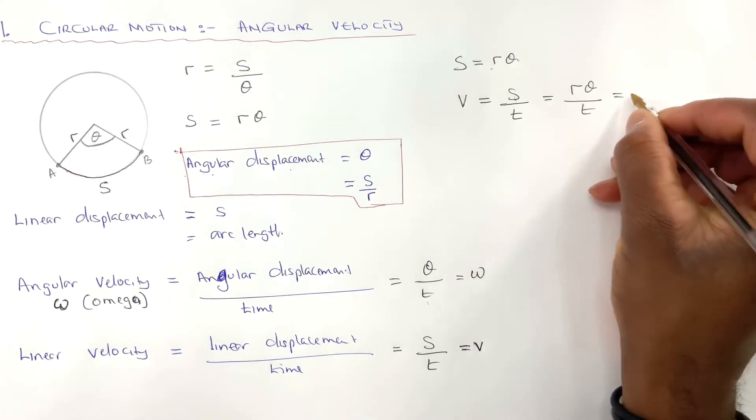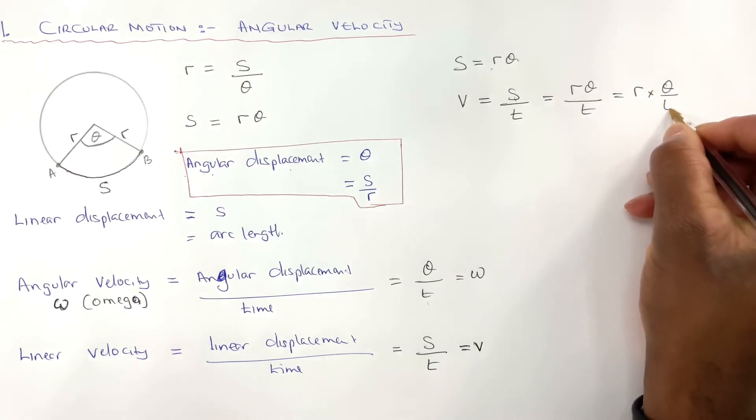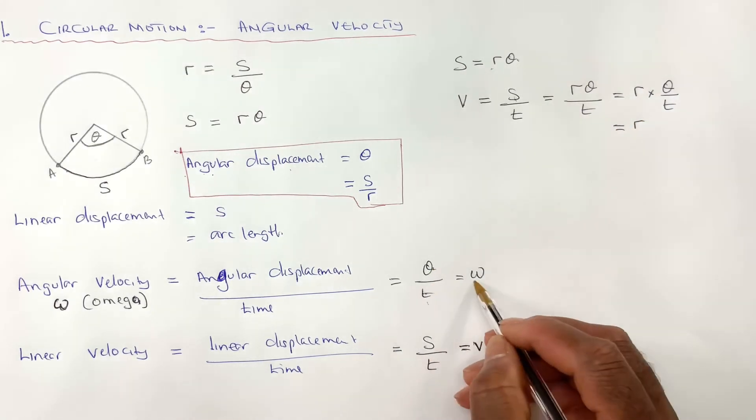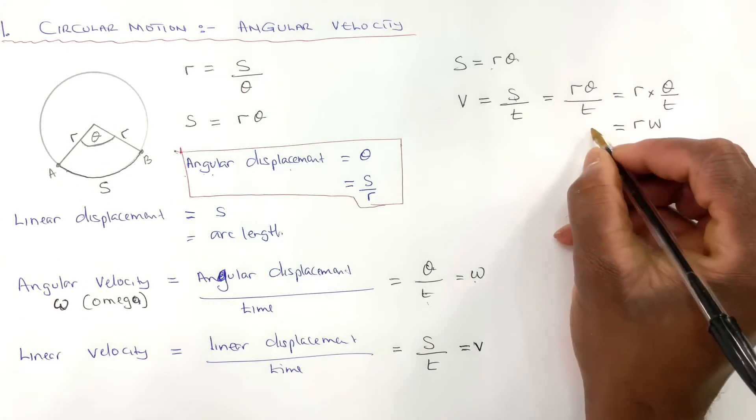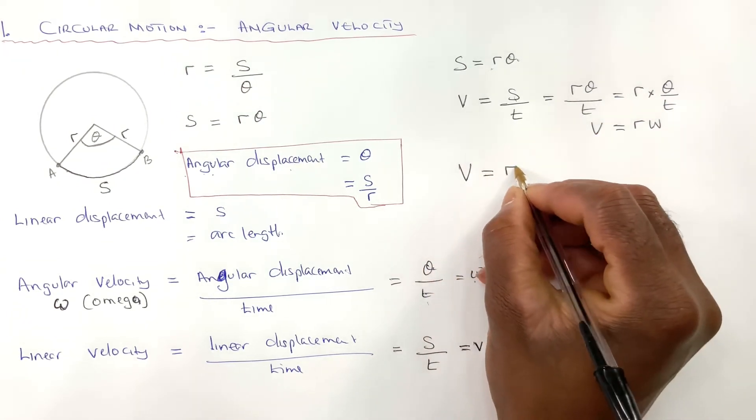And we can write R times theta over T, and that would be R. Theta over T is omega. That would be omega. So therefore, V equals R omega.